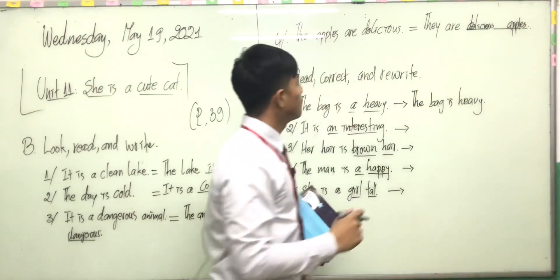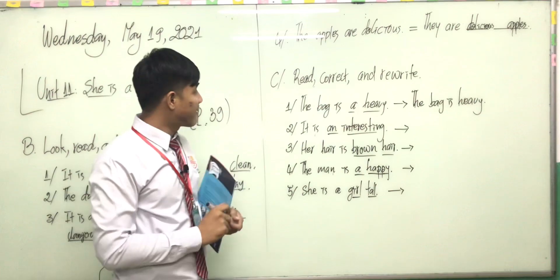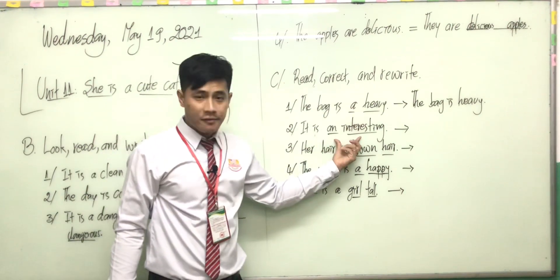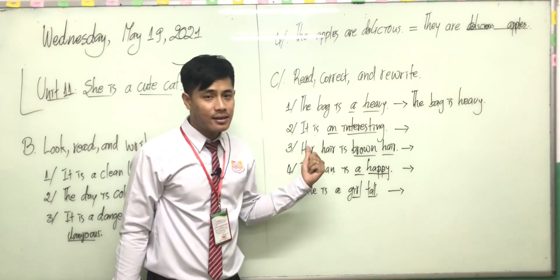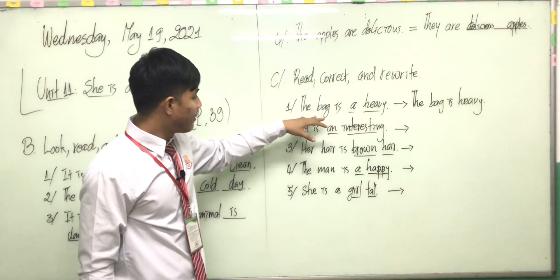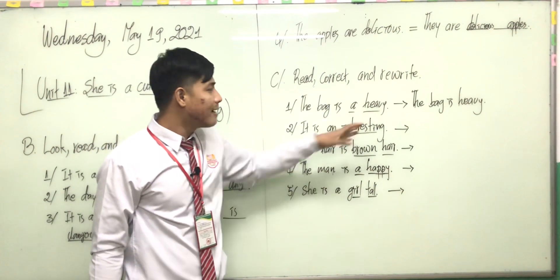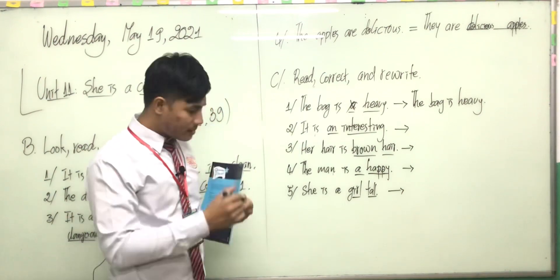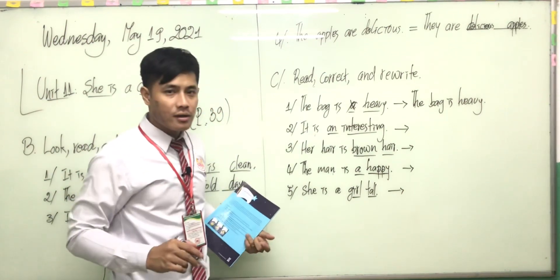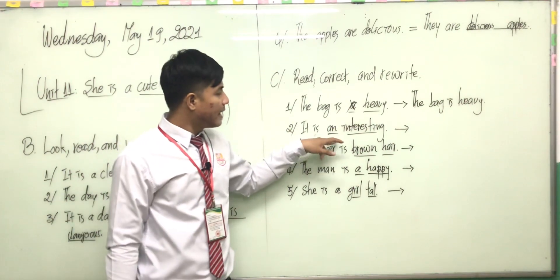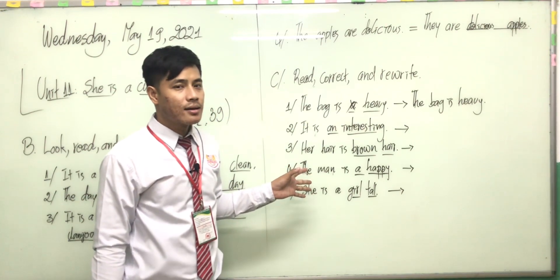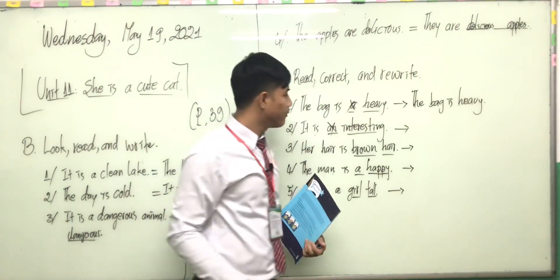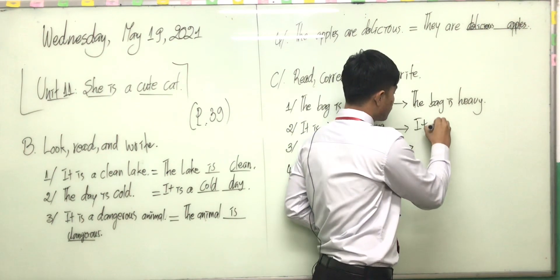Very good. Now we've finished Part B, so let's move to Part C: read, correct and rewrite. Look at the underlined words, then correct and rewrite. The first one has been done for you: 'The bag is a heavy' — we don't need 'a', we can just say 'The bag is heavy.' Number two: 'It is an interesting' — we don't need 'an', we can just say 'It is interesting.'